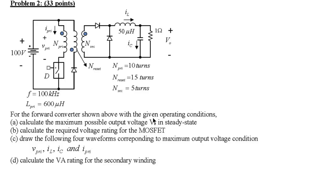In this video we'll continue the solutions to the sample midterm exam. This particular video will cover Problem 2, which is on a forward converter. We are given all three turns — primary, reset, and secondary — as well as the switching frequency and the primary side inductance, which can be used to calculate the magnetizing current on the primary side.